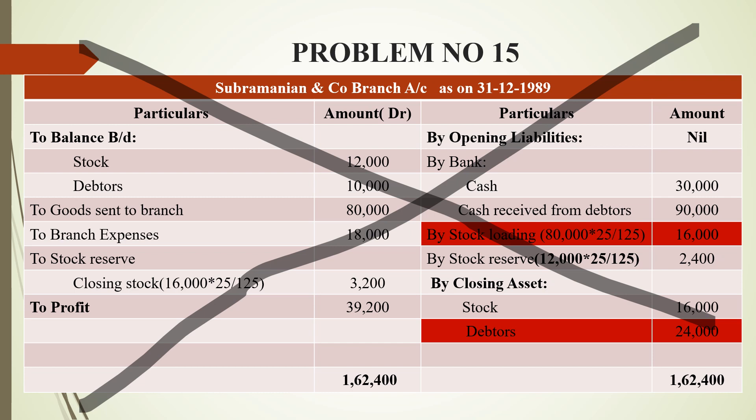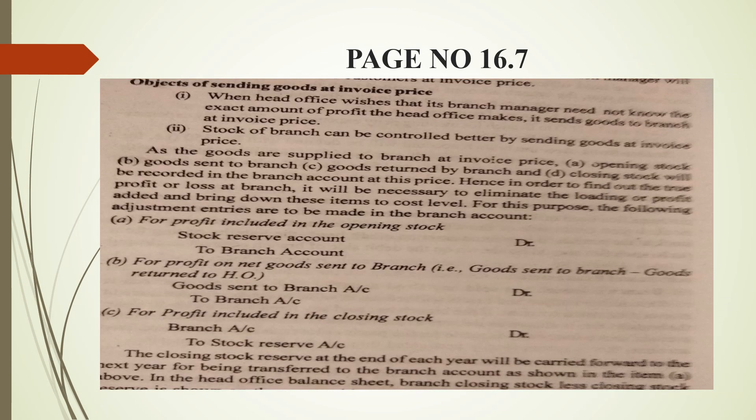According to certain rules, this preparation of the branch account is not correct, as highlighted regarding stock loading and debtors. As stated in the content at page 16.7, third line: in order to find out the true profit or loss at the branch, it is necessary to eliminate the loading or profit added and bring these items down to cost level. For this purpose, the following adjustment entries are to be made in the branch account. That is why we must get the stock reserve and prepare the actual true profit.